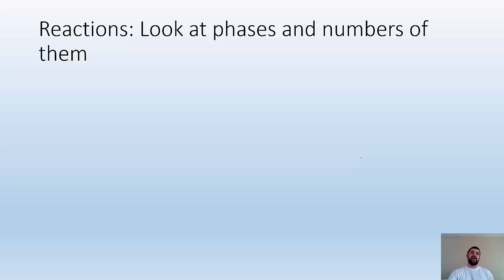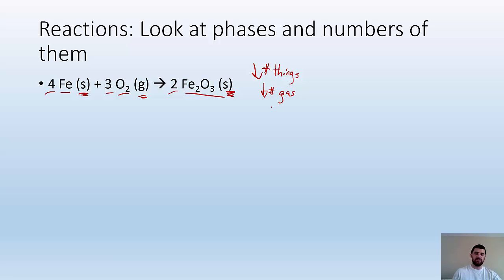When we're looking at reactions, you want to look at the phases and the numbers of them. For example, here I have iron rusting. I have iron solid reacting with oxygen, giving me iron oxide. I start with a solid, four solids, and three gases, and I end up with two solids. So not only am I decreasing the number of things, I'm also decreasing the number of gases. Gases are pretty chaotic. I just turned gases into part of a solid. So that's going to be a decrease in entropy.